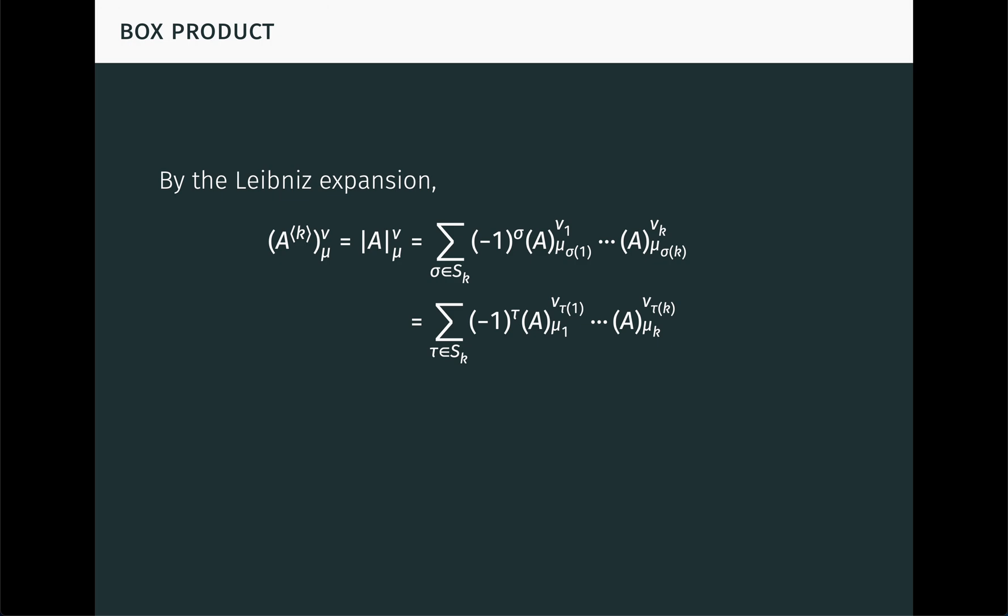However, there is a symmetric form of the Leibniz expansion, which looks like this. Notice here both the row and column indices are being permuted. The price we pay for this symmetry is an even larger sum, which we must scale down by k factorial, but it works. It's worth pausing the video to prove this for yourself. We use this as the basis for a definition of a new product.